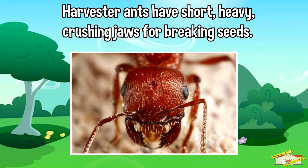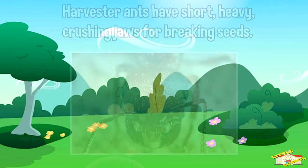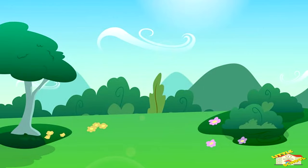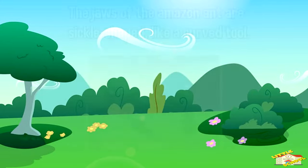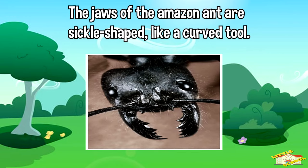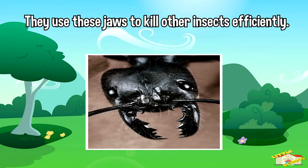Harvester ants have short, heavy crushing jaws for breaking seeds. Leaf cutters have jaws with sawtooth edges so that they can shred leaves. The jaws of the Amazon ant are sickle-shaped like a curved tool, and they use these jaws to kill other insects efficiently.